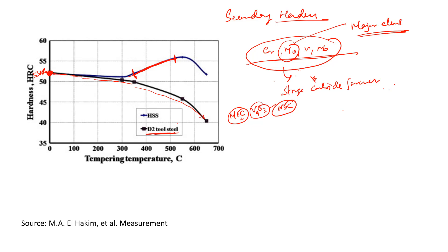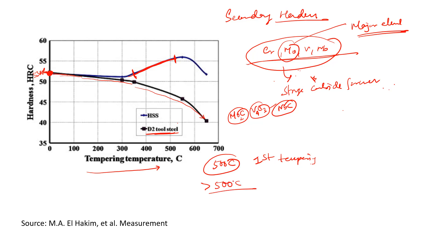In this kind of steel, we do the first tempering at around 500°C. At this temperature we have increased hardness. In the next step we do the second tempering, which is always done at greater than 500°C.